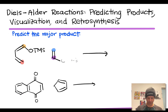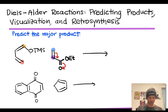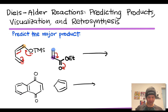If we expand the ester group, the carbonyl is electron-withdrawing. Pulling electrons into the carbonyl generates positive charge at the terminal carbon of the dienophile, highlighted in blue. On the other hand, the OTMS group on the diene is electron-donating; pushing its lone pair all the way to the terminus of the diene generates negative charge at that terminal carbon, highlighted in red. So the most nucleophilic carbon in the diene and the most electrophilic carbon in the dienophile must be connected to give the correct regioisomer.